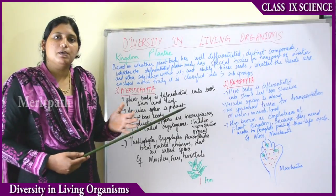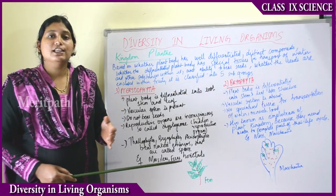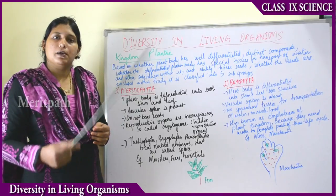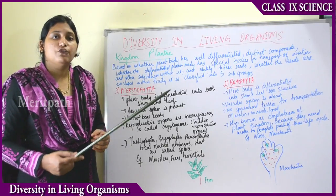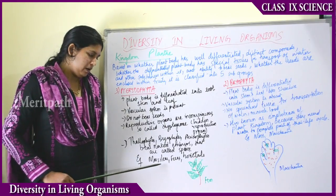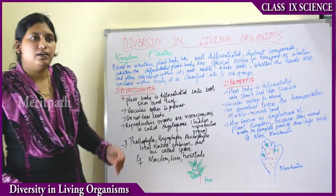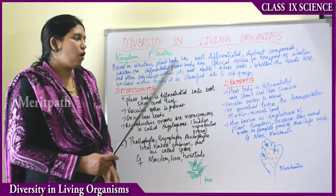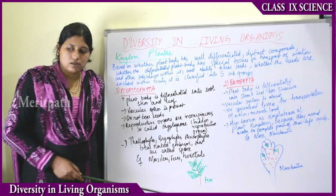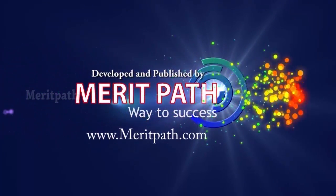The next two subgroups, Gymnosperms and Angiosperms, have very prominent reproductive organs, so they are known as phanerogams. Examples of pteridophyte plants are Marsilea, ferns, and horsetail. Usually the ornamental plants used for decoration in houses all come in these categories. Now let's move on to Gymnosperms and Angiosperms.